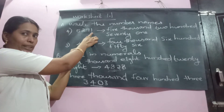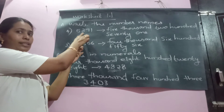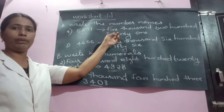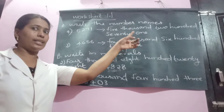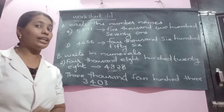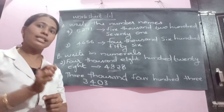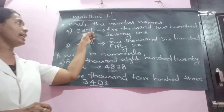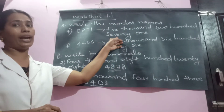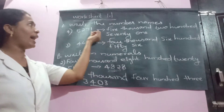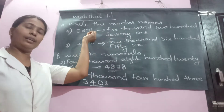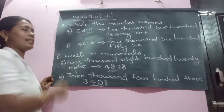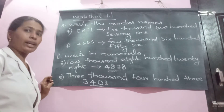The first digit from the right is the ones place, then tens, then hundreds, then thousands. So reading the number: 5 is in the thousands place, giving 5,000. Next is 2 in the hundreds, giving 200. Then 7 in the tens and 1 in the ones — together those last two digits read as 71. So the number reads five thousand two hundred seventy-one. Write it with the correct spelling.